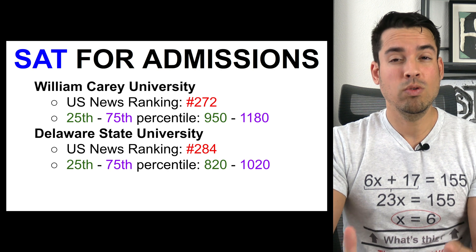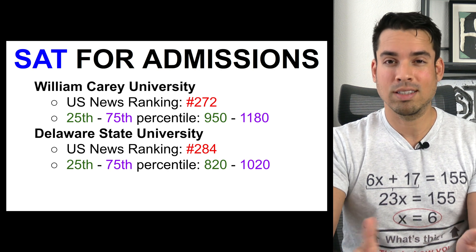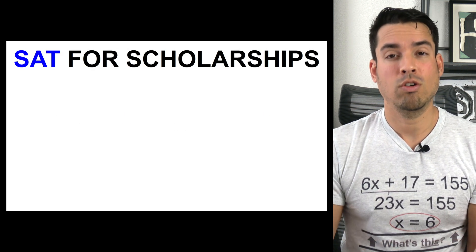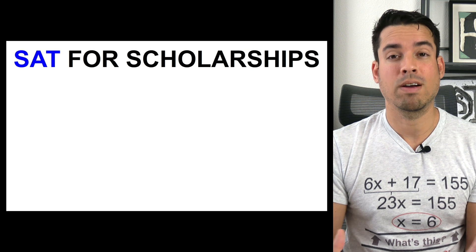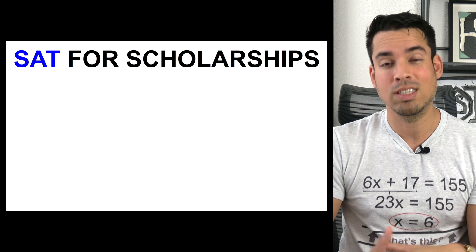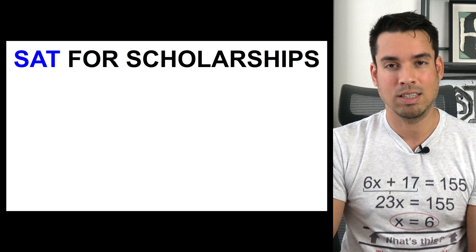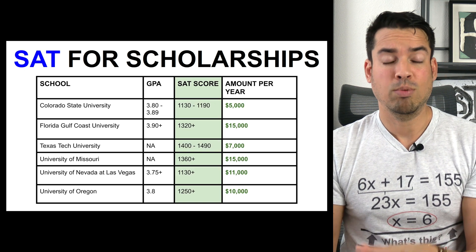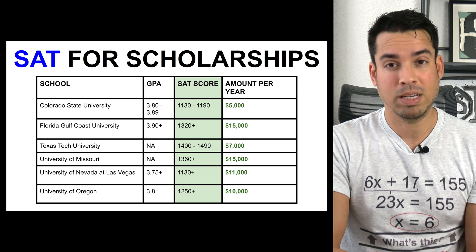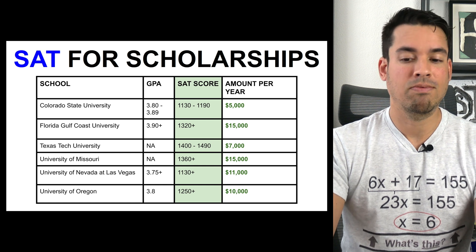As you can see, as we move down the rankings for these schools, the range of acceptable scores does indeed drop. Now let's talk about the SAT for scholarships. There are a plethora of scholarships you can qualify for. Here are some interesting examples where both an SAT score and a GPA are required — as you can see from this table, you can get anywhere from five thousand to fifteen thousand dollars per year.